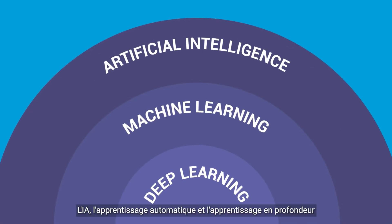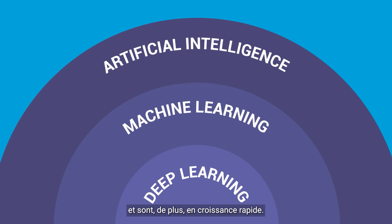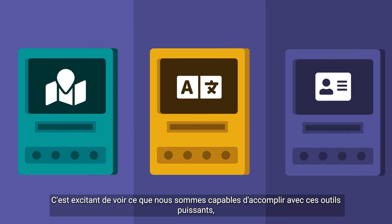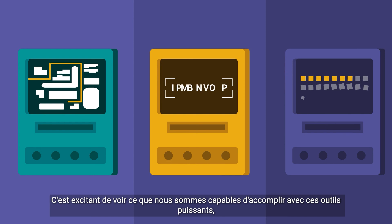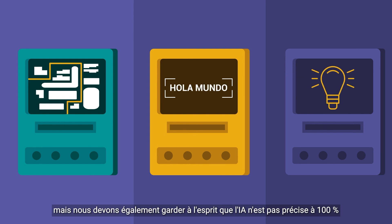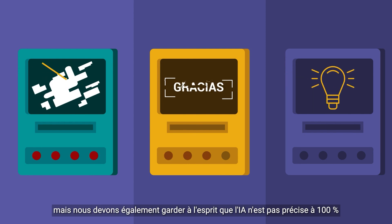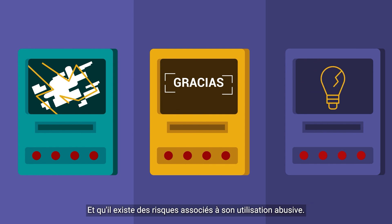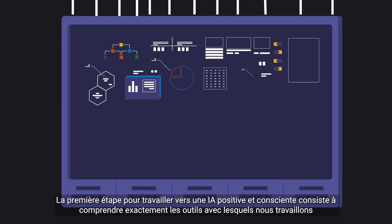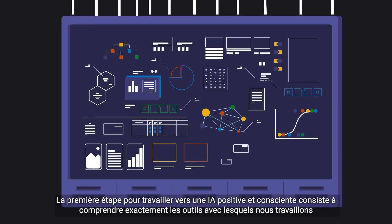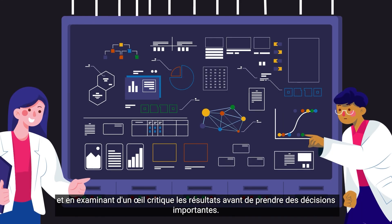AI, machine learning, and deep learning are all new fields for most of us, and are moreover rapidly growing. It's exciting to see what we are able to accomplish with these powerful tools, but we should also keep in mind that AI is not 100% accurate and that there are risks associated with its misuse. The first step in working towards positive and conscious AI is understanding exactly the tools that we are working with, and looking critically at the results before taking important decisions.